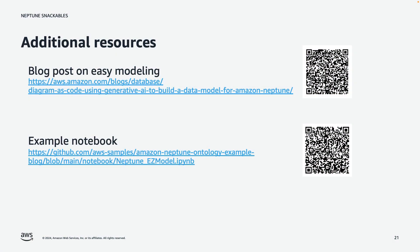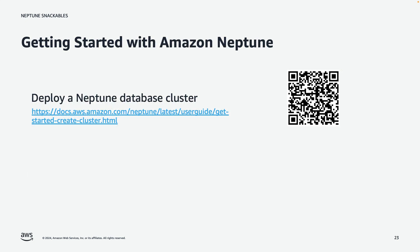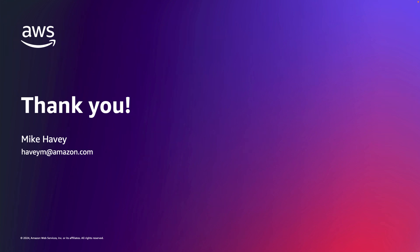In summary, a great way to get started with graph is to produce that initial easy model, and we can use generative AI and diagram as code to make that effort straightforward — even generating sample data to test it out. For additional resources: we have a blog post demonstrating this easy modeling approach and an accompanying notebook at the links shown. A related tool that reverse engineers data already in your Neptune database and draws it using PlantUML is available at the first link. Our Neptune Demos Hub is a great resource for demonstrations of common graph use cases. You can deploy a Neptune cluster in your own AWS account within minutes. Our team would love to discuss further — please contact us at wwwso-neptune-ssa@amazon.com. Thank you very much.